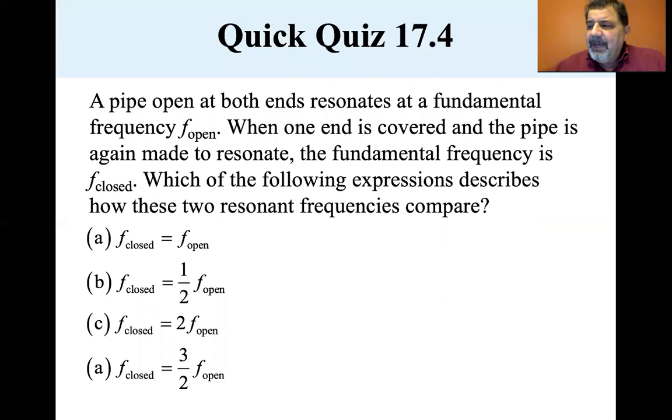Okay, a pipe open at both ends resonates at a fundamental frequency f open. When one end is covered and the pipe is again made to resonate, the fundamental frequency is f closed. Which of the following expressions describes how these two resonant frequencies compare? Well, if f close is a quarter wavelength and f open is a half wavelength, we'll see that f close is equal to one half of f open. We know that f close isn't equal to f open, so the answer is B.